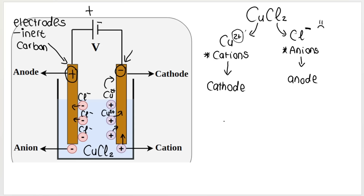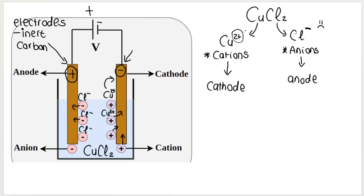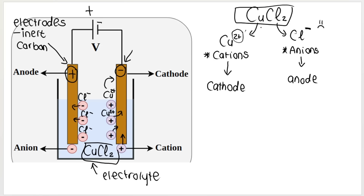Electrolysis will only take place when electricity is passed through the dilute solution — in this case a dilute solution of copper chloride. So the electrolyte contains the ionic substance copper chloride, and that breaks up into its ions when dissolved in water or when you have molten copper chloride, and then the process starts.